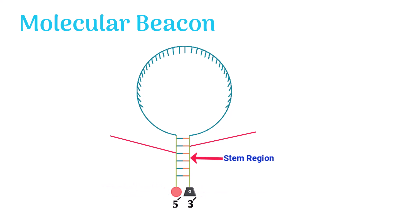The stem contains two sequences on both sides which are complementary to each other. Each of these complementary sequences is around four to six nucleotides long. The loop sequence is the most important part because it binds to the target DNA.